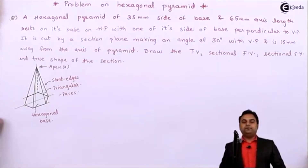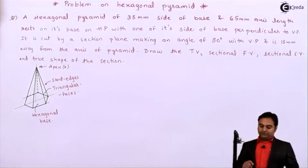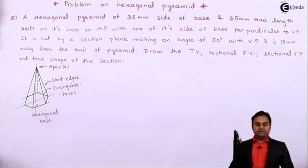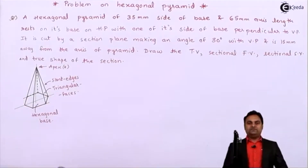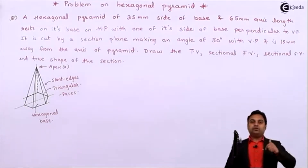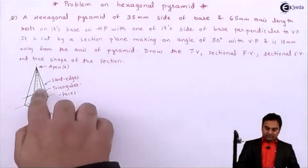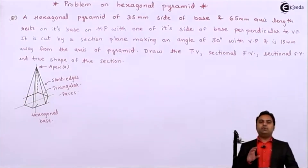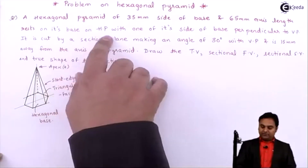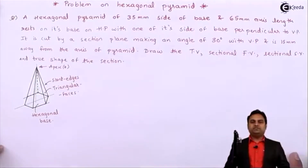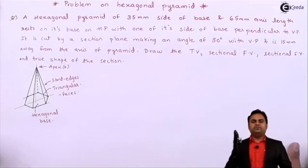The condition is a hexagonal pyramid of 35 mm side of base and 65 mm axis length resting on its base on HP. If it is resting on HP, we are looking from the top and will see the hexagonal base. If it was resting on VP, from the front view we would see the hexagonal base. Next, it rests with one of its sides of base perpendicular to VP. I'll explain how to draw that in the solution.